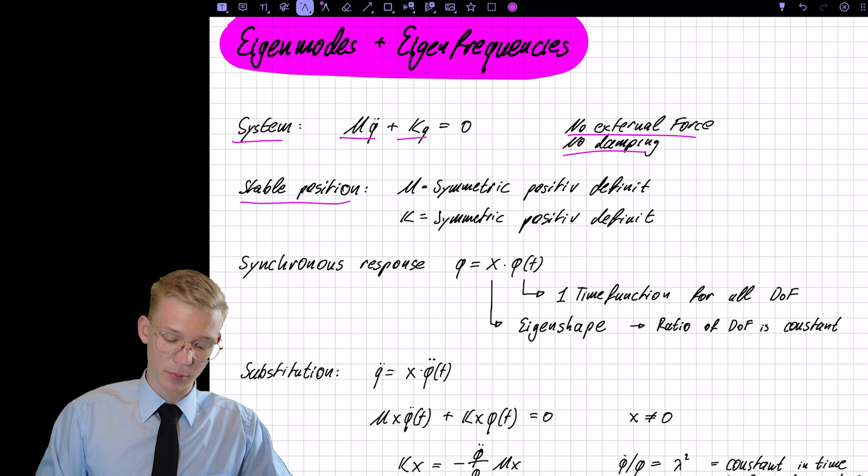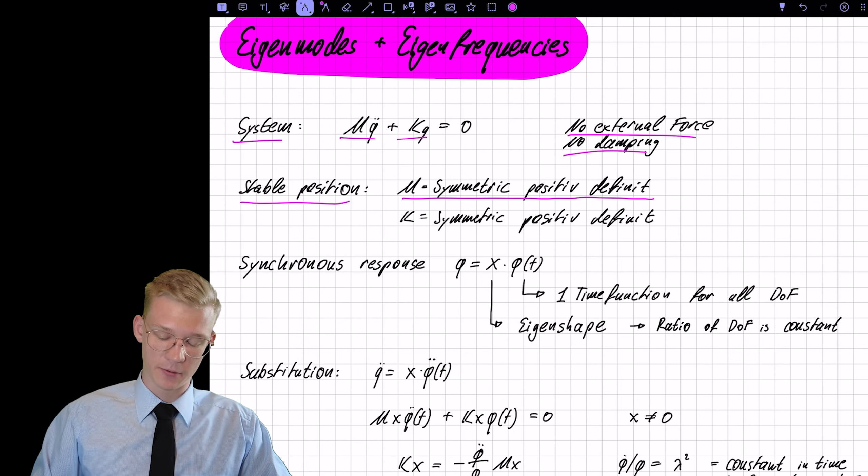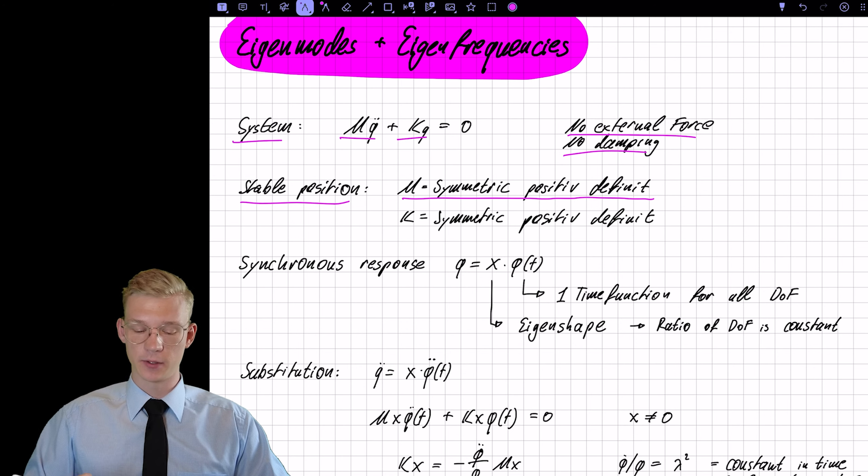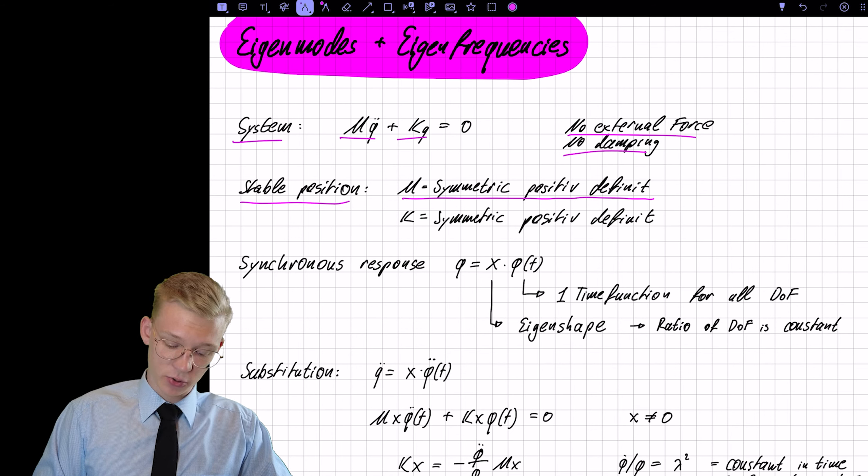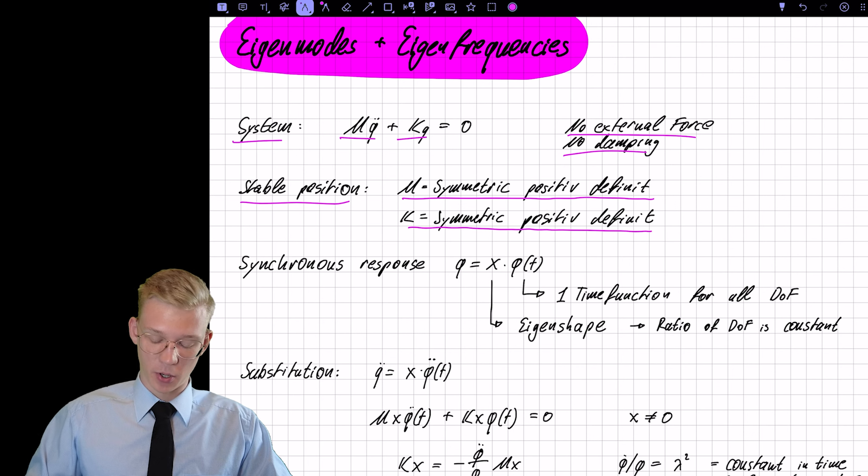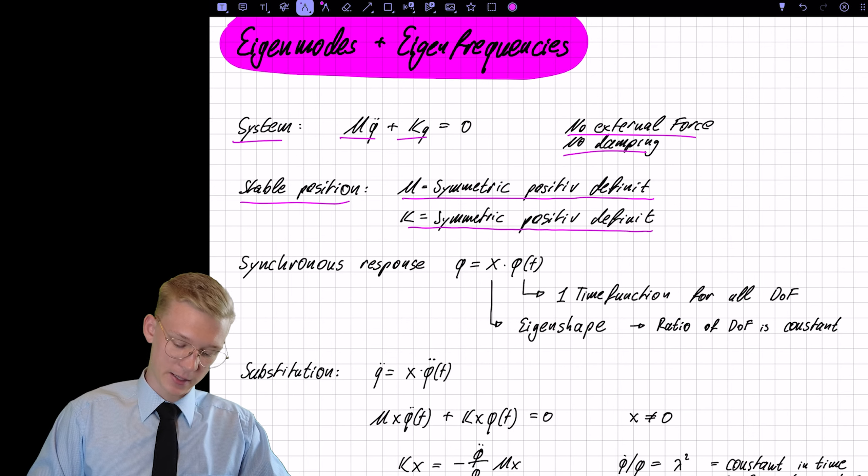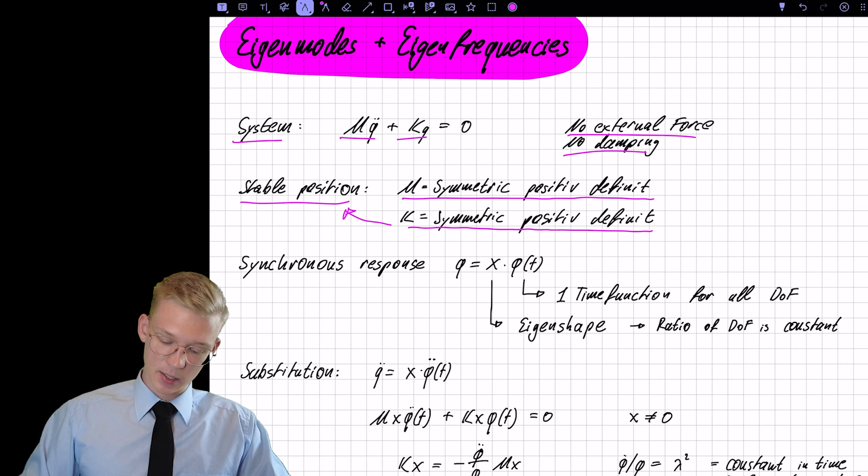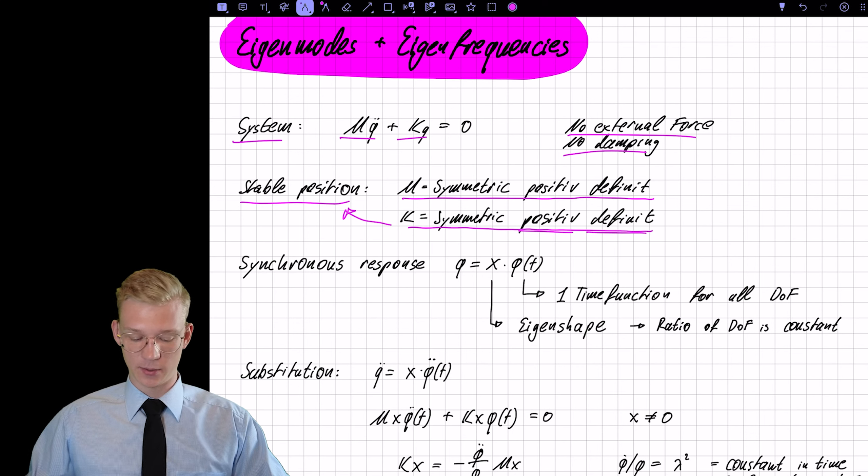If we assume a stable position, our mass matrix is symmetric and positive definite, regardless if it's stable or not, but matrix K is symmetric and positive definite if we have a stable position. So that means that the eigenvalues are either positive or greater than zero.